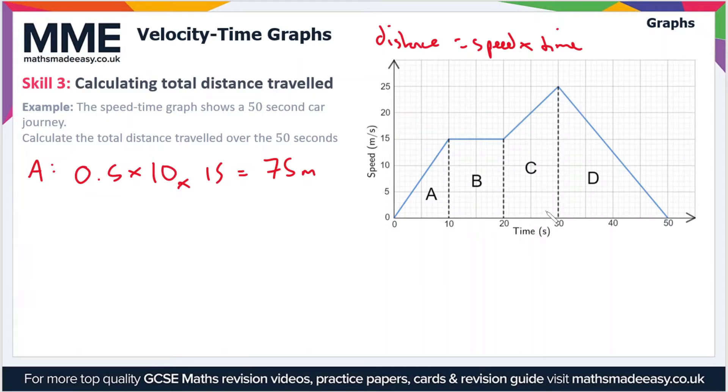Moving on to section B, we can see that we've got a rectangle here. To calculate the area of a rectangle, it's just the width times the height. The width is 10 and the height is 15, so we've got 10 times 15, which is 150 meters.